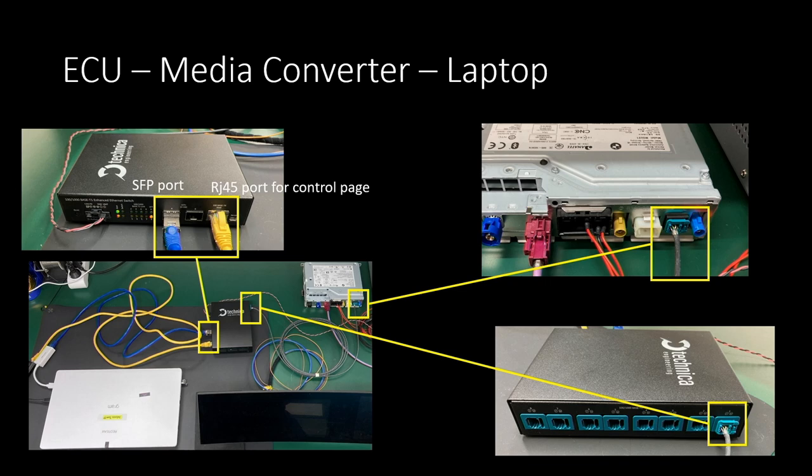The media converter has two Ethernet ports: an SFP port and an RJ45 port. The SFP port is used to exchange SOME/IP data between the laptop and ECU. The RJ45 port connects to the control page of the media converter. Each media converter may have a different interface, so check the manual of your specific device.